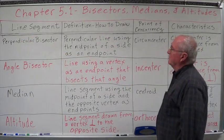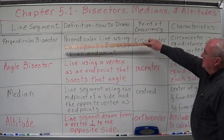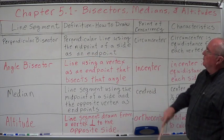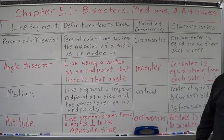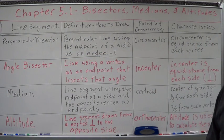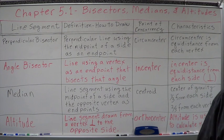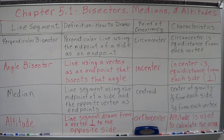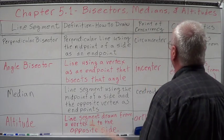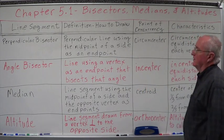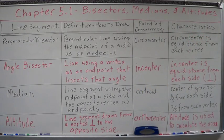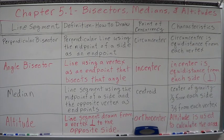First, the perpendicular bisector: draw a perpendicular line using the midpoint of a side as an end point. Draw a perpendicular to the side and keep going. Its point of concurrency is called the circumcenter. The circumcenter is equal distance from each vertex — and that gives you some algebra there.